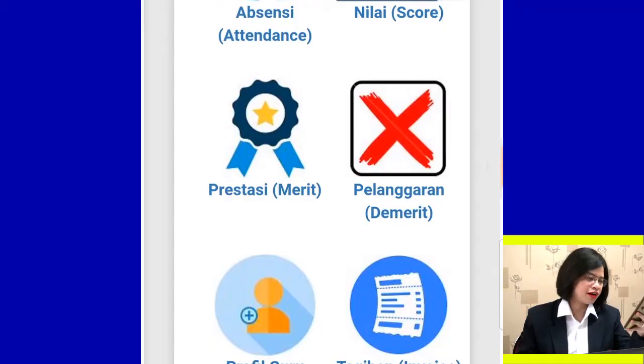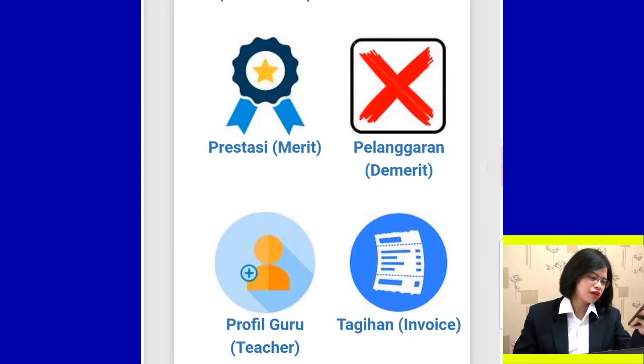The score types available include daily score, homework, assignment, project, portfolio, performance, and test. Prestasi and merit is the record of your achievements — whether you won a competition, joined a competition, or participated well in an activity.